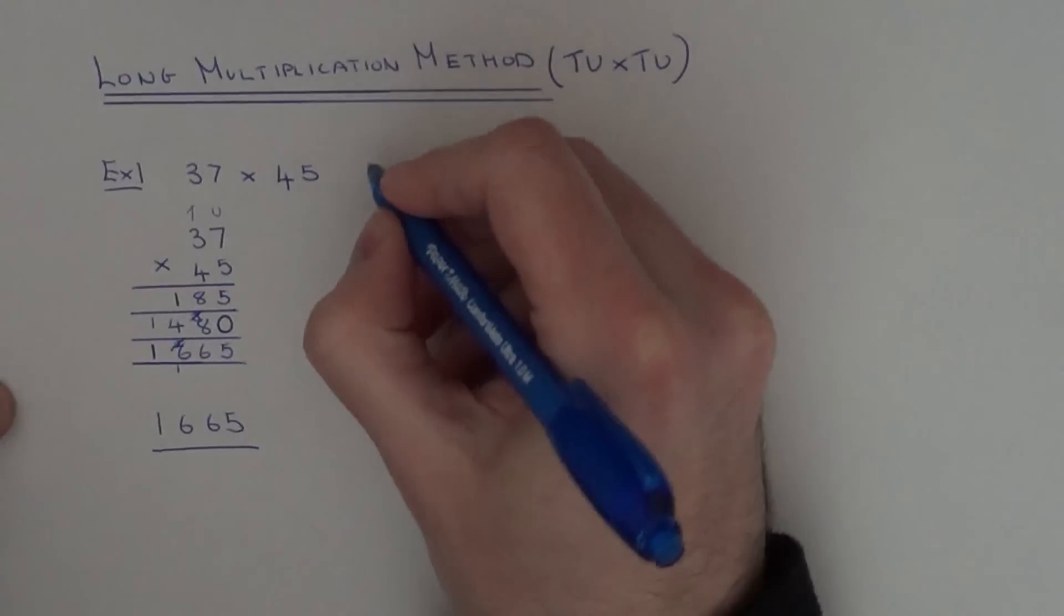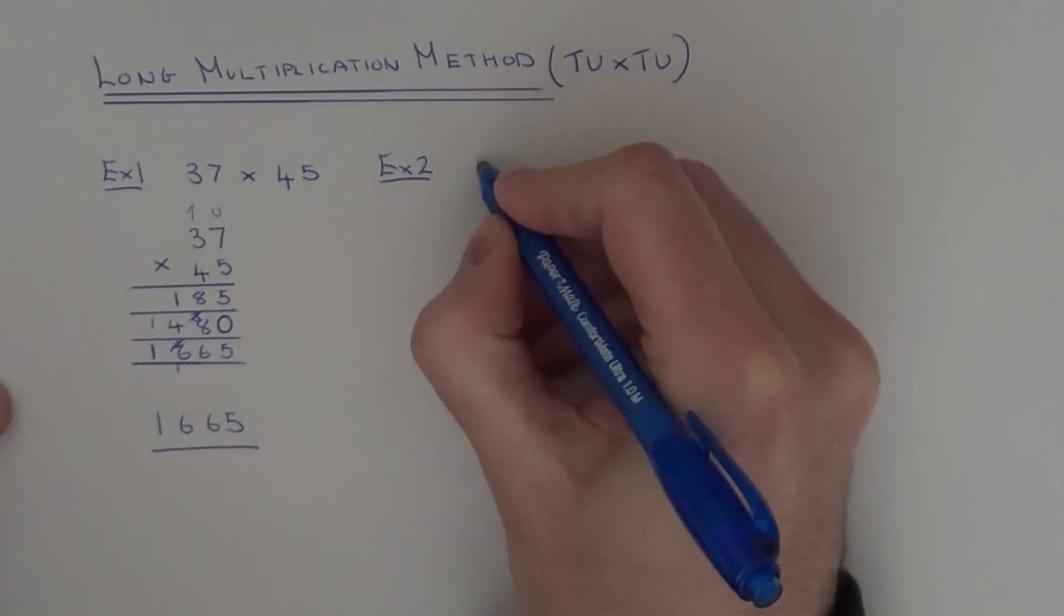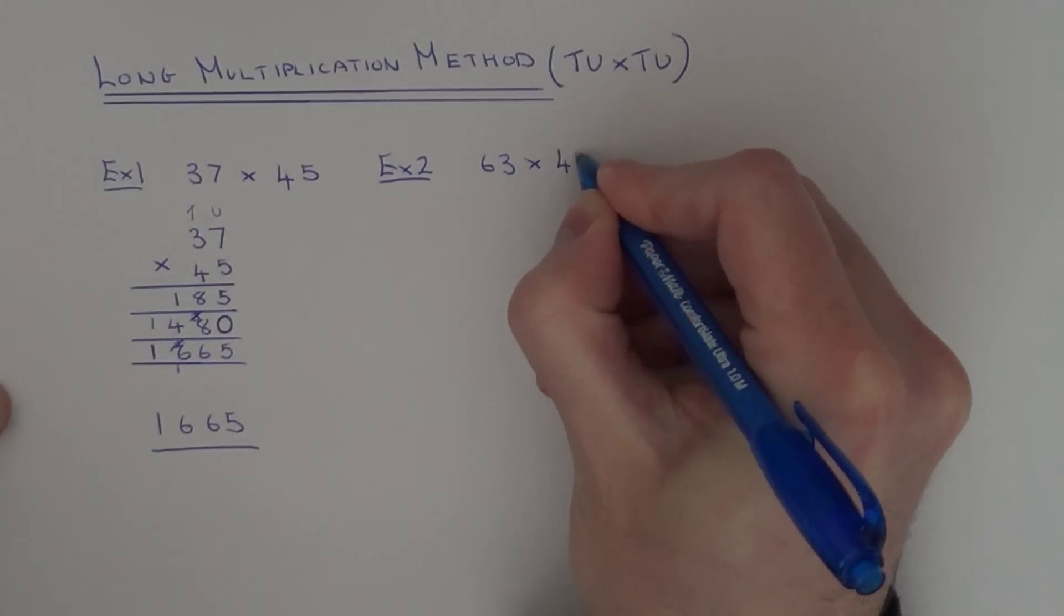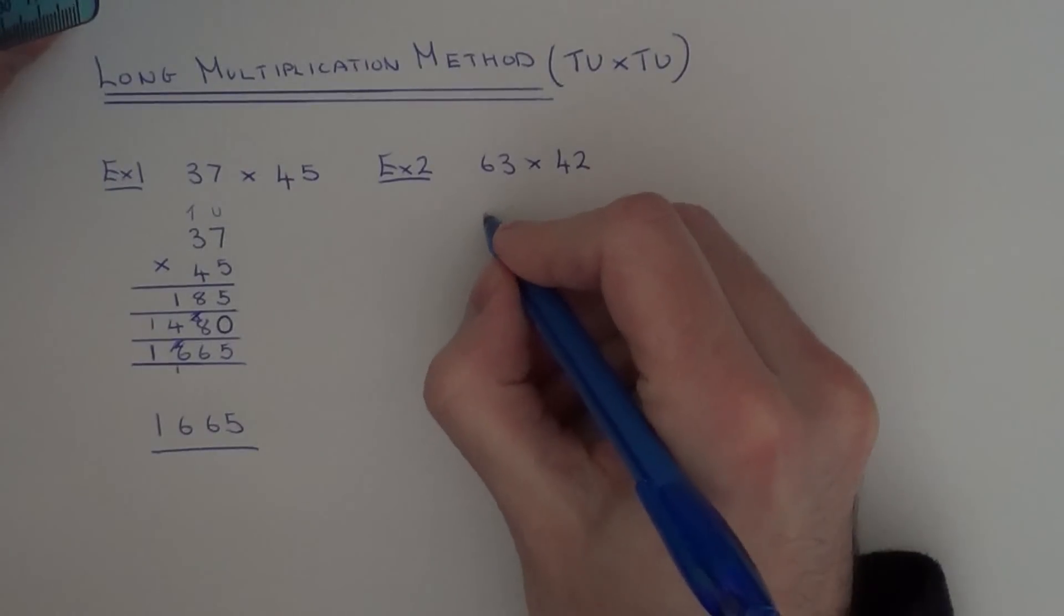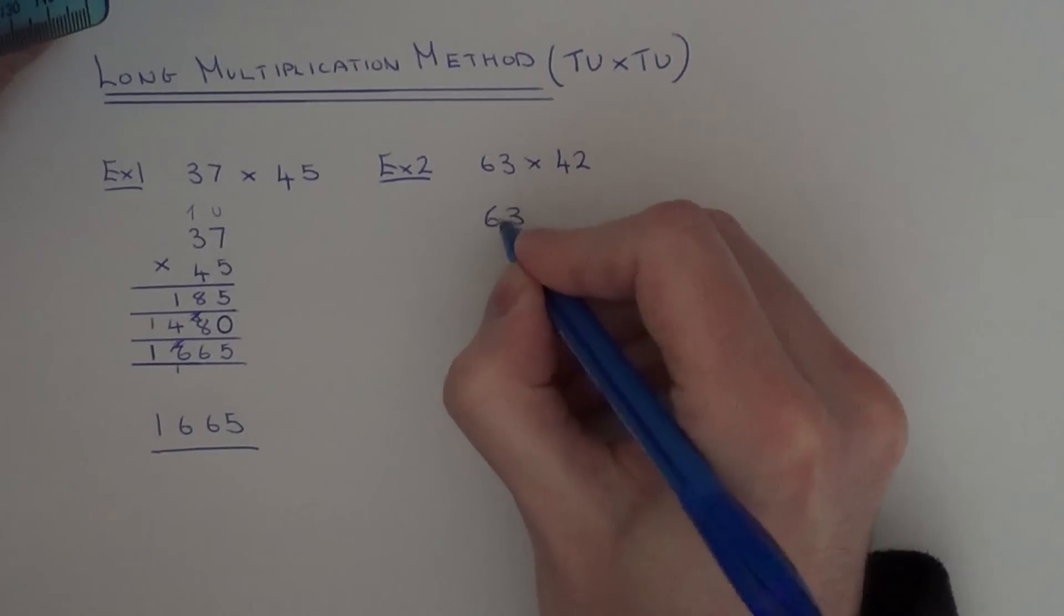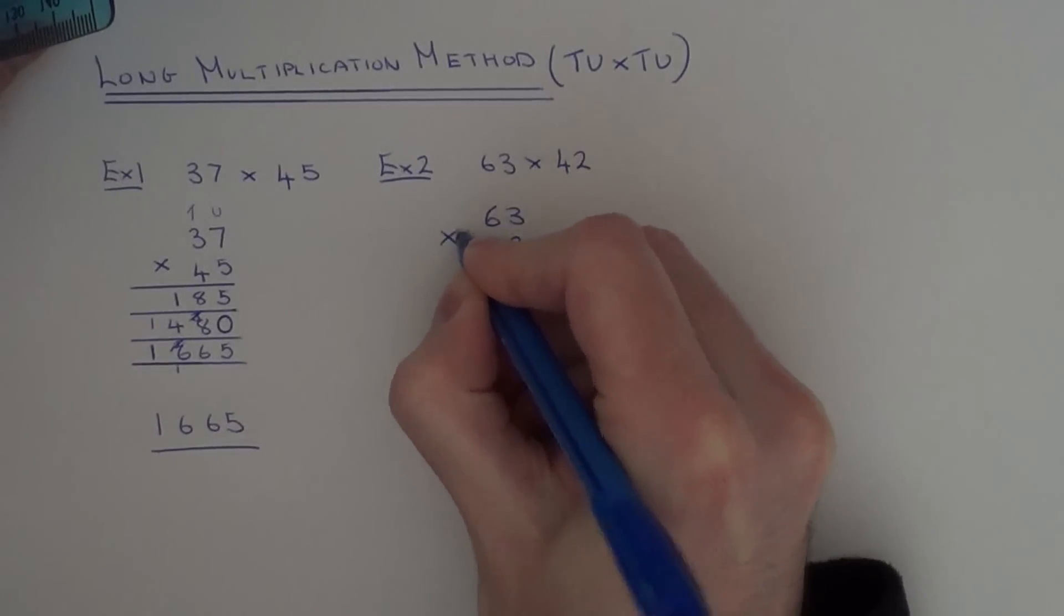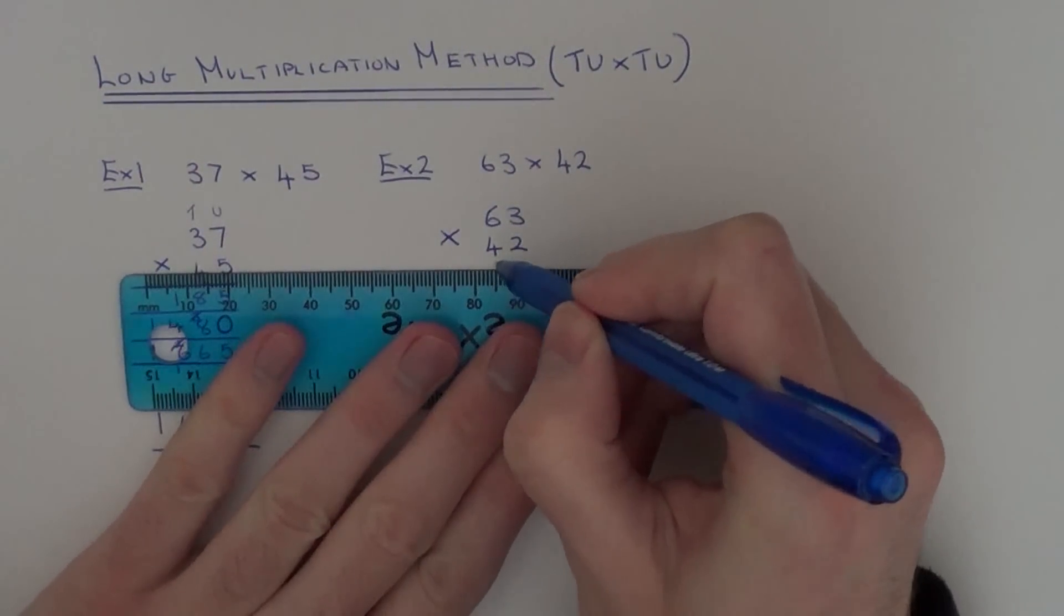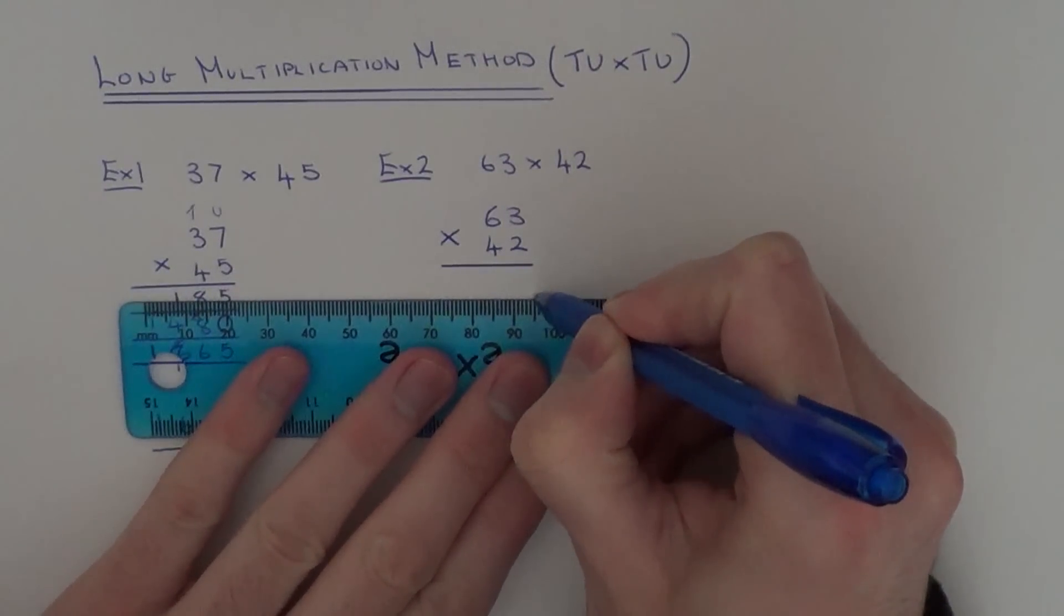So let's take a look at another example. Example 2: this time we've got 63 times 42. So again, first of all, write the two numbers in columns and put a multiplication sign on the left. So again, draw your three answer lines in.